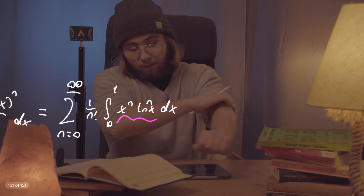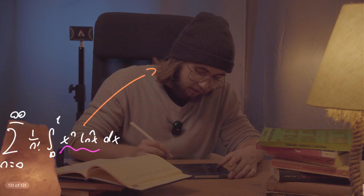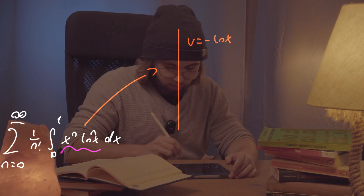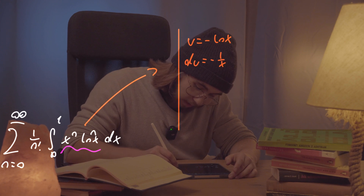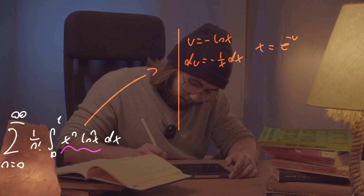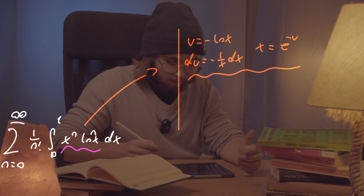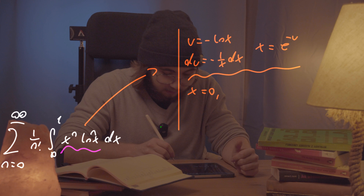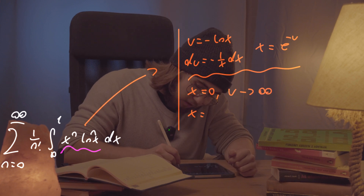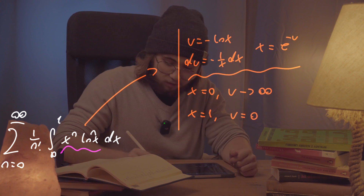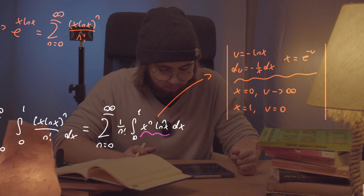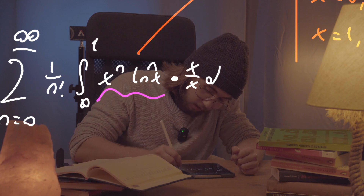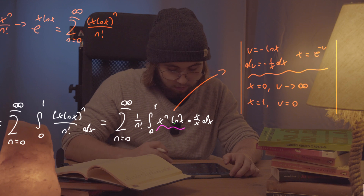There is a lovely U-substitution we can make here. I would like to substitute u equal to negative natural log of x, which gives du equal to negative 1 over x dx, and also x equals e to the negative u. About the bounds: when x equals 0, the natural log of x is negative infinity, so u approaches infinity. When x equals 1, u equals 0. So our bounds of integration go from infinity down to 0.